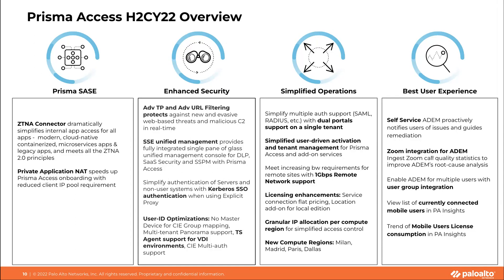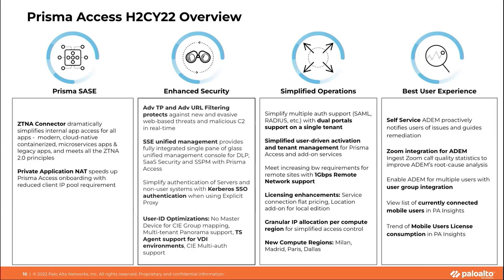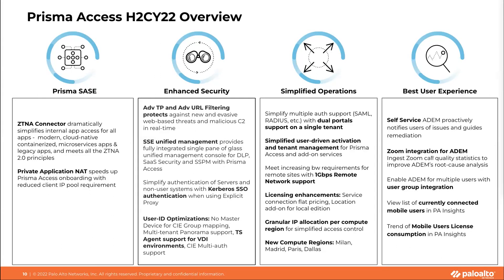With Prisma Access 3.2 and 3.2.1, we released features in four buckets. The first is Prisma SASE — making connections from users to applications easy and secure. The second is enhanced security innovations. The third is simplified operations, making it easier to operationalize new features and onboard customers. The fourth is best user experience, covering innovations around ADEM — digital experience monitoring.